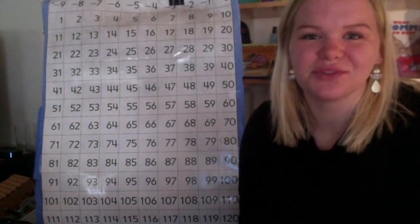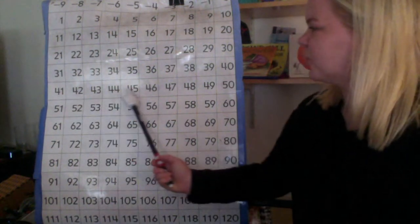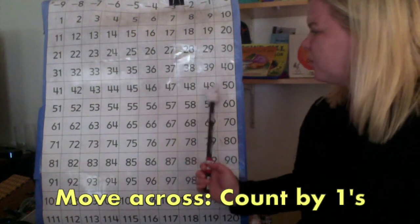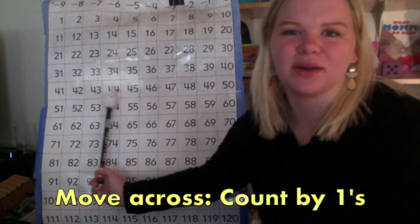First, let's review the rules of the number grid. We know that when we move across a number grid, we count up 1. Or, we count back 1 if we are subtracting.